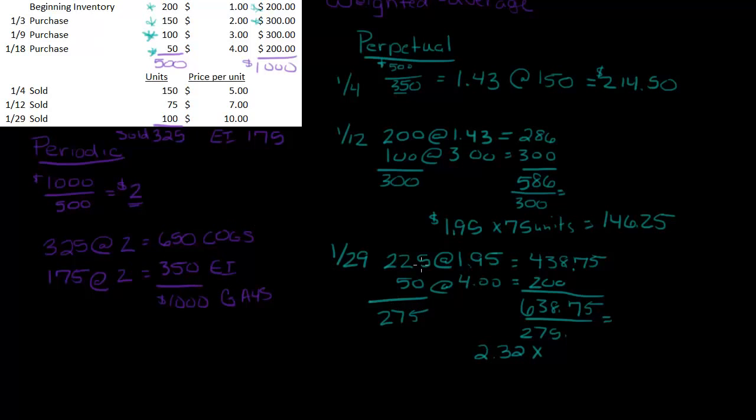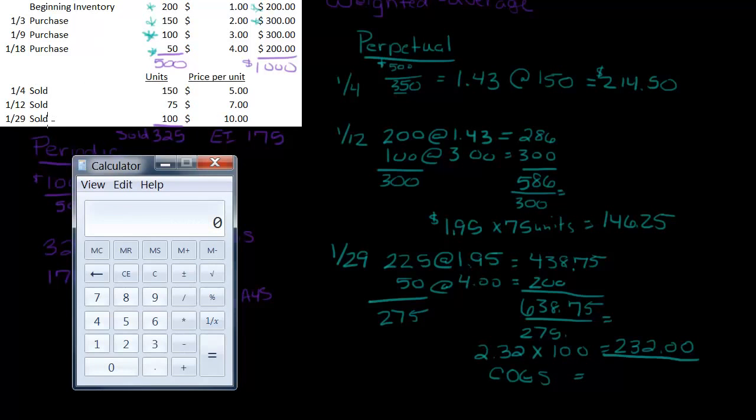So my average cost here is $2.32 and we sold 100 units, so times 100 equals $232. Don't need the calculator for that one. So now I need to add up the $214.50, the $146.25, and the $232 to get my cost of goods sold for the month. So cost of goods sold is equal to $214.50 from the sale on 1/4 plus $146.25 from the sale on 1/12 plus $232 from the sale on 1/29, so that equals $592.75.